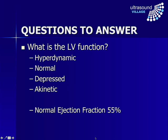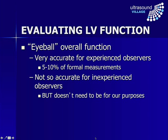So how do we actually do this? To evaluate the function, we recommend that you eyeball it to get a semi-quantitative estimation. This has been shown to be very accurate for experienced observers — up until a few years ago it was the most accurate echo measurement of left ventricular function. Experienced observers can estimate function usually to within five, certainly 10%, of formal measurements. Inexperienced observers won't be so accurate, but fortunately we're not trying to get a precise measurement. What we're trying to do is broadly categorise patients into which of those four groups they fit, so that we can help work on the diagnosis and treatment.